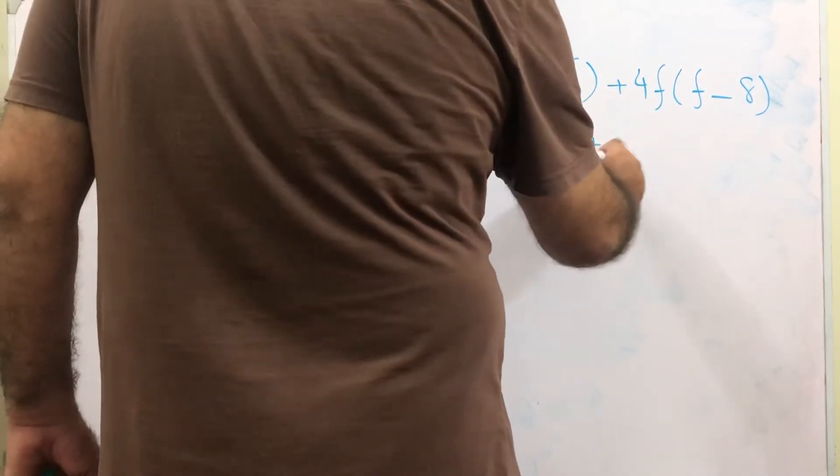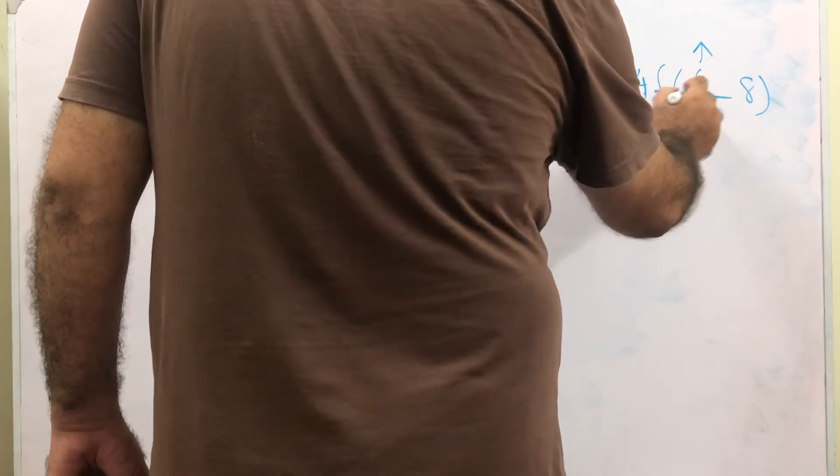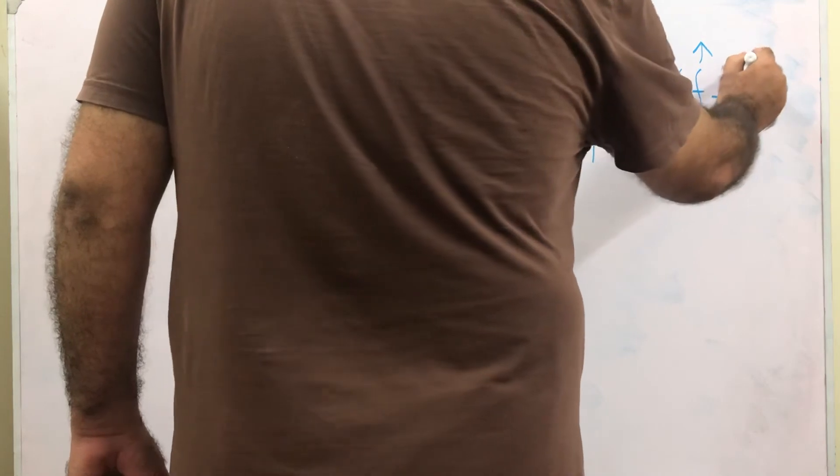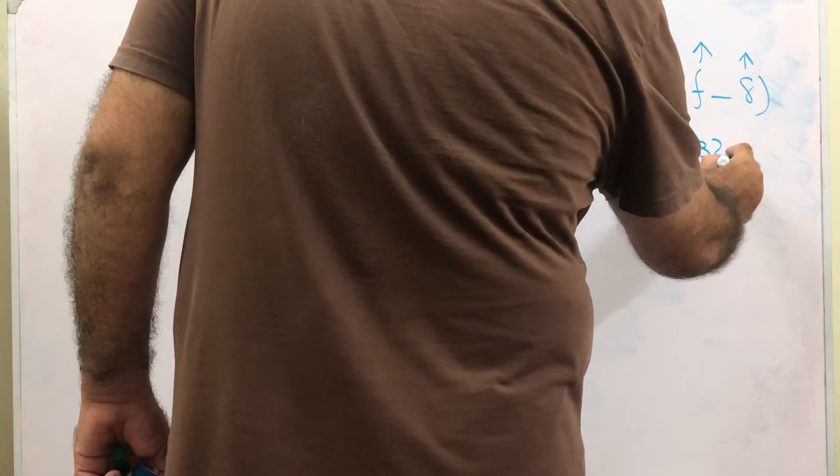Then we need to open this bracket. Plus 4f will be multiplied with this one. It becomes 4f square. And plus 4f will be multiplied with minus 8. 4 into 8 minus 32f.